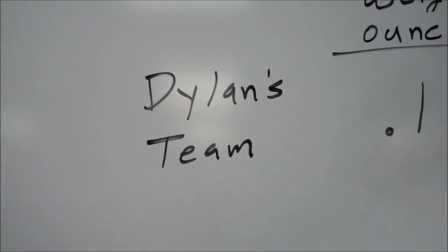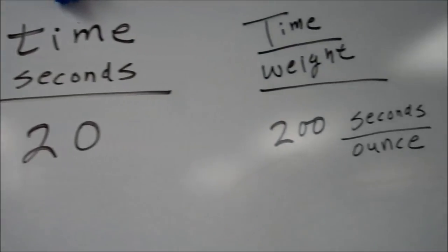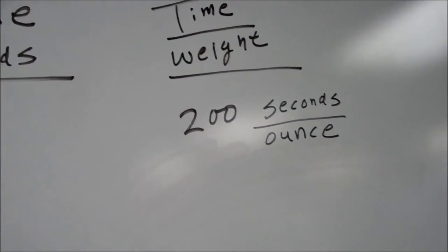Flat. We have Dylan's team here weighing in at 0.1 ounces, spun for 20 seconds, so time per weight is 200 seconds per ounce.